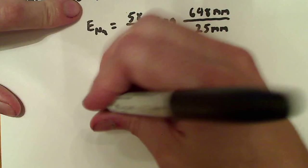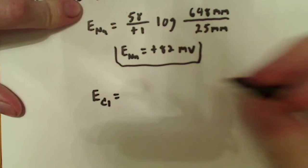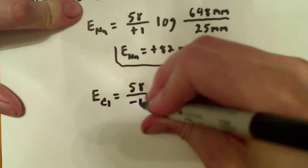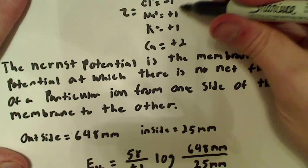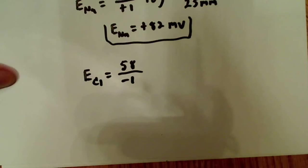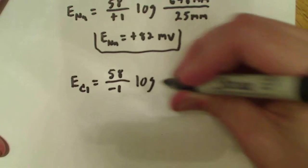So, I'm going to use the same equation. Now, I'm just going to say E for Cl is equal to 58. Now, this is where you've got to be careful because remember the Z value for chloride is actually minus 1 up here, okay? So, it's minus 1. Plug the minus 1 in there. And multiply that by the log.